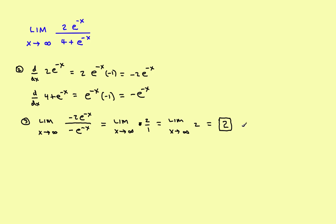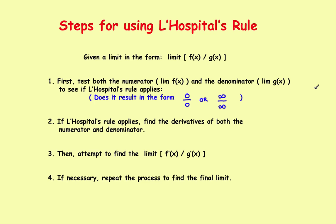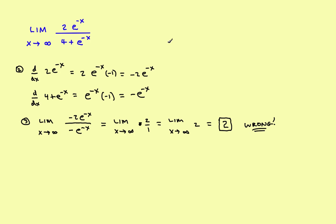The problem is, that would be wrong. The problem here is that you didn't do the first step — you didn't check to see whether L'Hopital's rule applies. The very first step says you have to test the numerator and denominator to see if it winds up in one of these two indeterminate forms. So now let's go back and belatedly do that step.